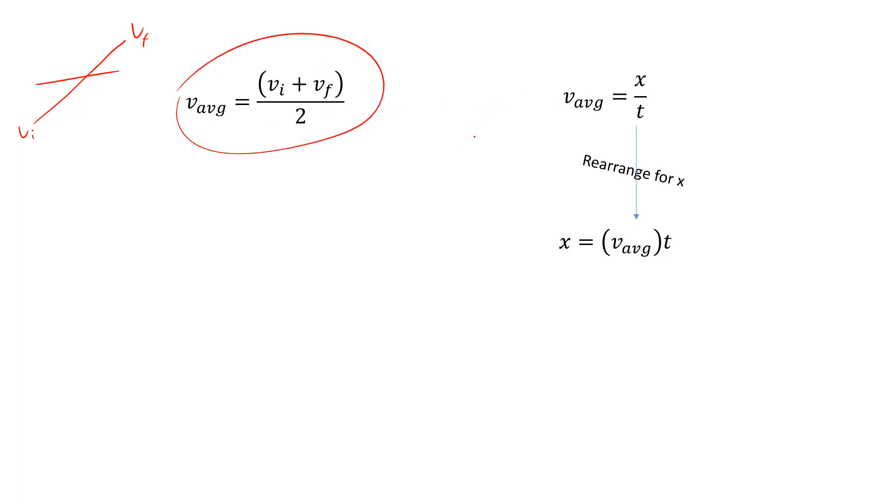We can rearrange v equals x over t to v equals v average over t. At that point, we can substitute that in, and that results in this equation. So if you don't have this on your equation sheet, you can put it together from two other equations.